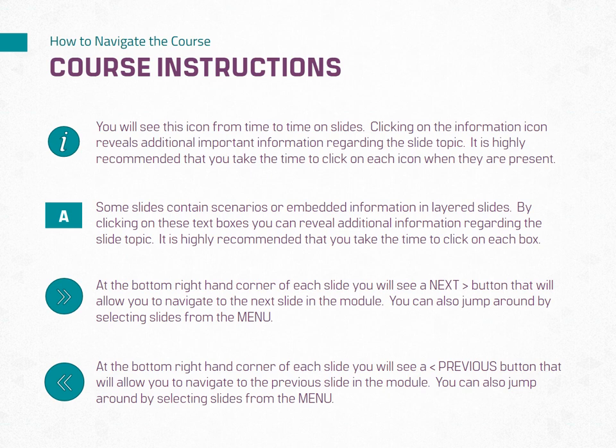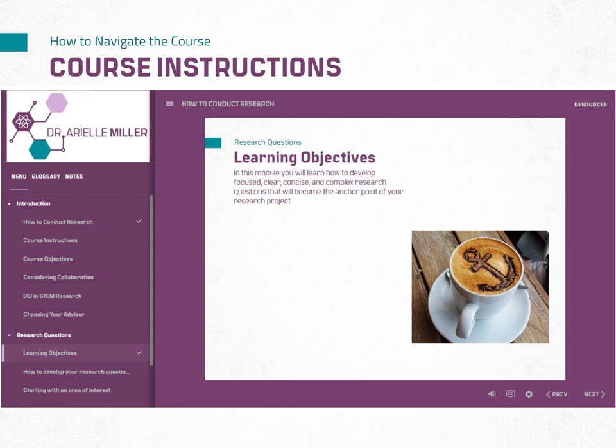Unless otherwise noted, to progress through the course, the learner must actively navigate to the next slide. Audio will typically be played with each slide and the learner is encouraged to let the audio play through to the end before continuing to the next slide. At any point the learner can navigate back to a previous slide. Course navigation can also be done through the menu on the left-hand side of the screen. The default setting is to show the menu, however it can be hidden by selecting the hamburger icon next to the course title.